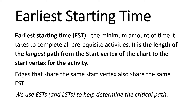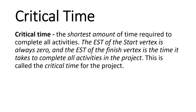We use earliest starting times and latest starting times to help determine the critical path. The critical time is the shortest amount of time required to complete all activities. The earliest starting time of the start vertex is always zero — that is the vertex at the beginning of the diagram. The earliest starting time of the finished vertex is the time it takes to complete all activities in the project, and this is called the critical time for the project.